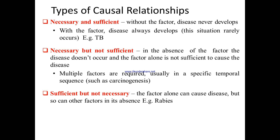Types of causal relationships: Necessary and sufficient — without that factor the disease never develops; with the factor, disease always develops. This situation rarely occurs, but some cases like TB are examples. Necessary but not sufficient — in the absence of the factor the disease does not occur, and the factor alone is not sufficient to cause disease. For example, Mycobacterium tuberculosis is necessary to cause TB, but by itself cannot cause the disease — it needs additional factors. So it is necessary but not sufficient.